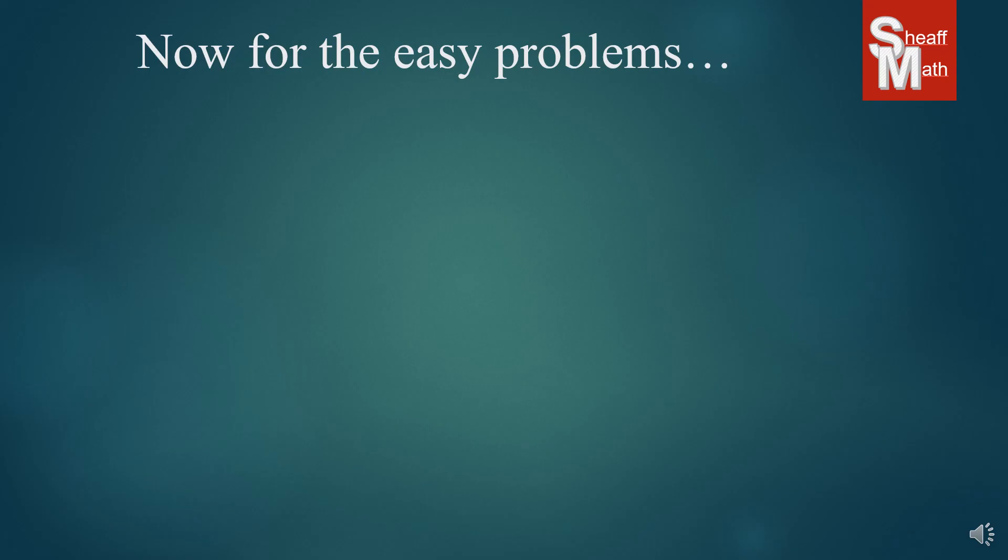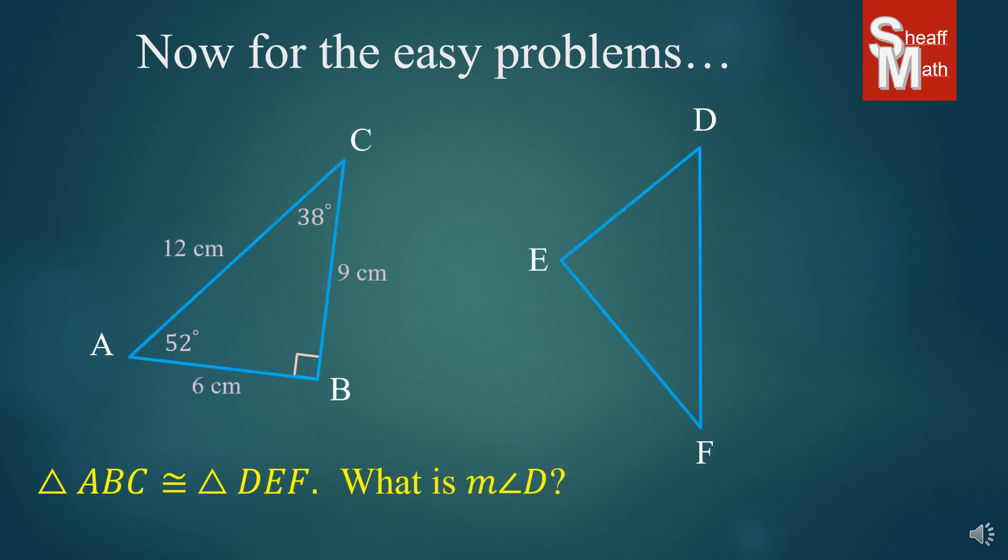Now, let's take a look at an easy problem. Let's suppose you're given this question. It says, triangle ABC is congruent to triangle DEF. What is the measure of angle D?